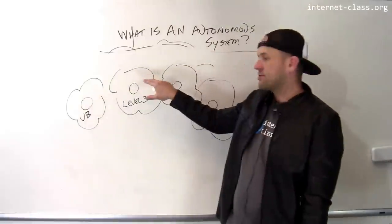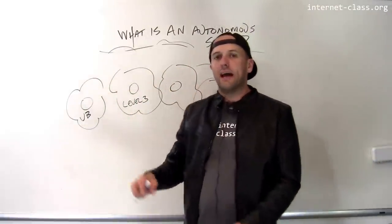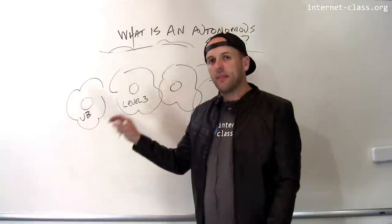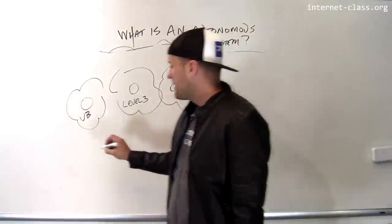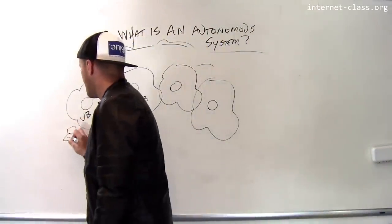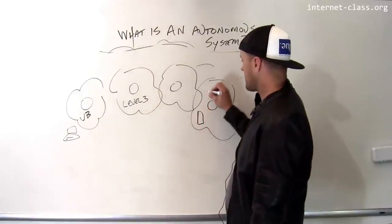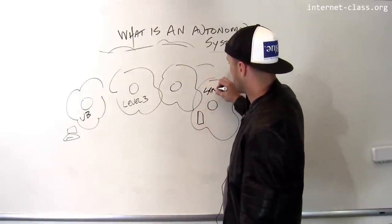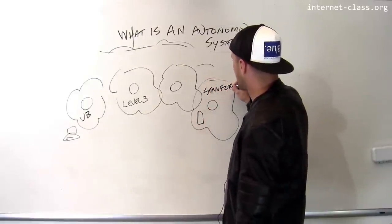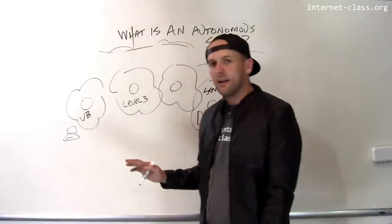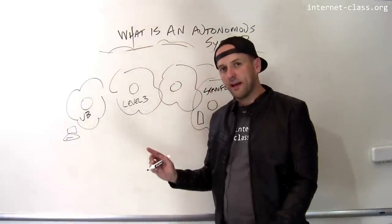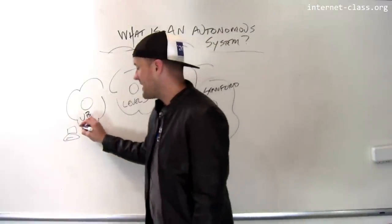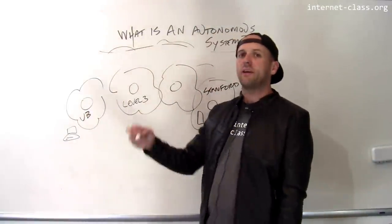It's only once traffic leaves UB's network and heads out across the broader internet that things start to get more interesting. So let's say I'm connected to UB's network and I want to communicate with a computer that's located over here. Let's say this is Stanford or something like that, the other side of the country. How does this work?